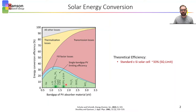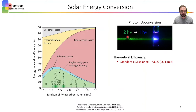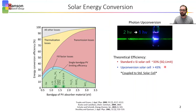A large percentage of the efficiency losses are due to the transmission of the sub-band gap photons shown here in red. One way to capture and harness those lower energy photons is through photon upconversion, which takes two lower energy photons and converts them to one higher energy excited state, which can be harnessed in a solar cell. When coupled to a standard solar cell, maximum theoretical efficiencies greater than 43% could be achieved.